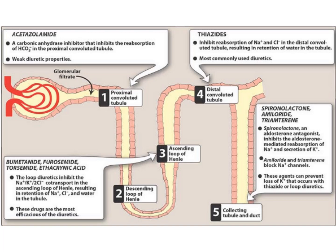The last group is the potassium-sparing diuretics, which involves two subgroups. The first acts as aldosterone antagonists like spironolactone, which inhibit aldosterone-mediated reabsorption of sodium and secretion of potassium. The second subgroup includes sodium channel blockers like amiloride and triamterene, which block sodium channels and prevent the loss of potassium. This potassium loss typically occurs with thiazide or loop diuretics.